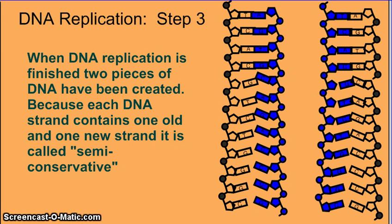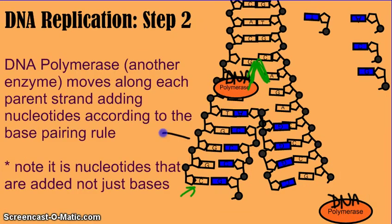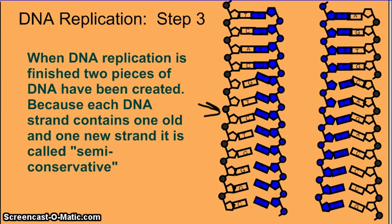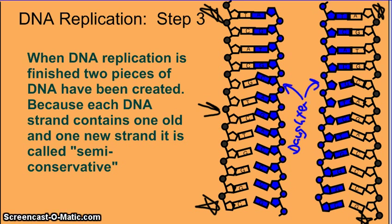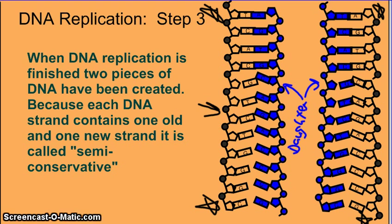The black strand here represents the original parent DNA from the diagram before. The black strand represents the parent DNA — there's one here and one here, on this side and one on this side. The blue strand then is our daughter DNA, and there's one on each side, just like they were forming in the slide before. We had our two blue daughter strands on the inside, and here they are again. Two pieces of DNA have been created. Because each DNA strand contains one old and one new strand, this process is called semi-conservative.